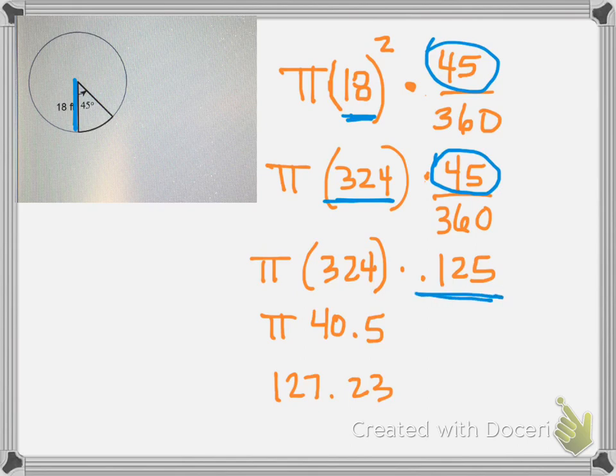I multiplied, right, that dot means multiply, 324 times 0.125 and I got 40.5.